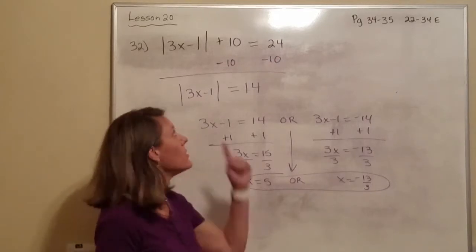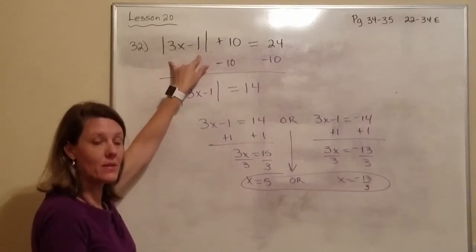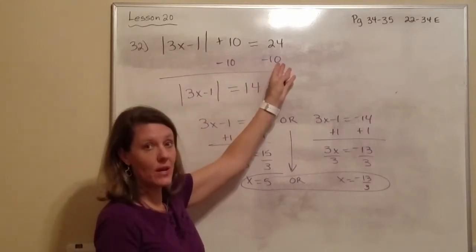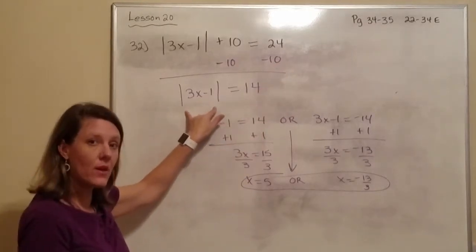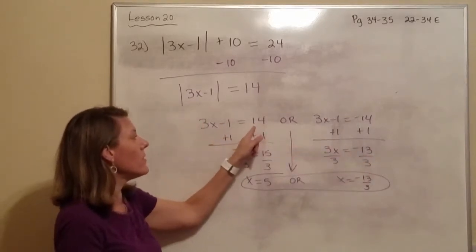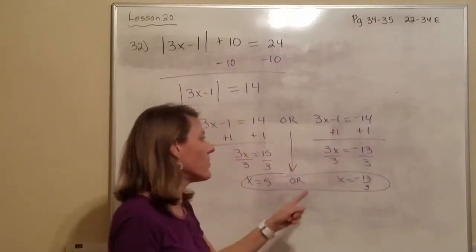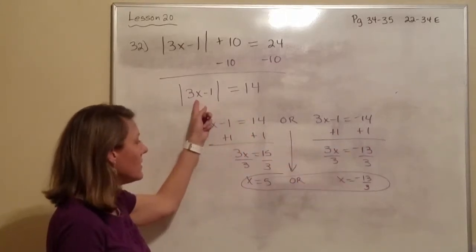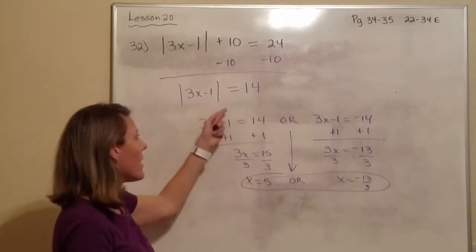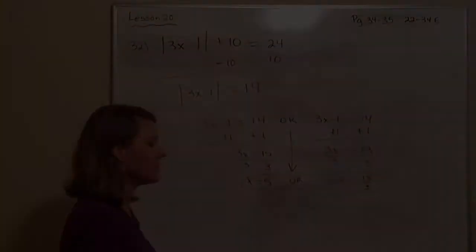Let me recap what you have to do when you see something like this. You're going to get the absolute value all by itself. And then, so we had to subtract 10 from both sides. Once you have the absolute value all by itself, you're going to split it. And do the positive answer and the negative answer and then solve for both. Because if you were to put this in to the absolute value, then you would get that answer. And if you put 5 in, you would get that also to the original.